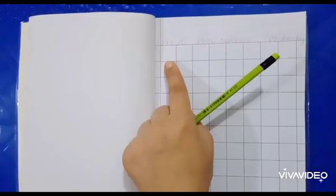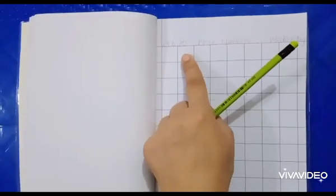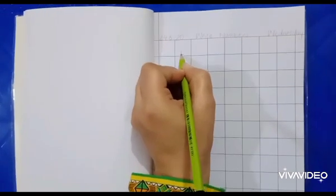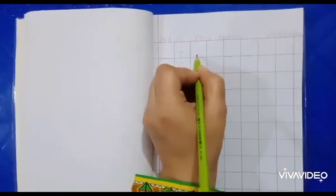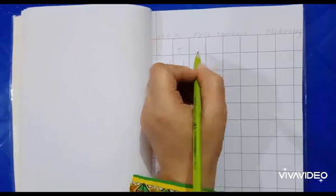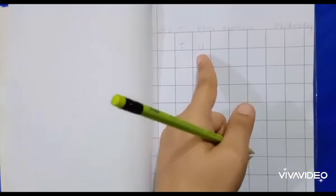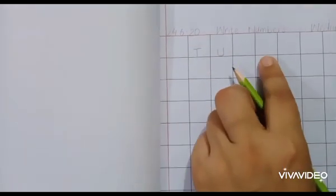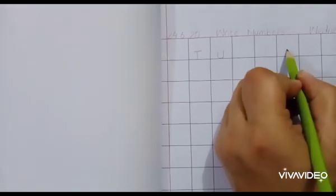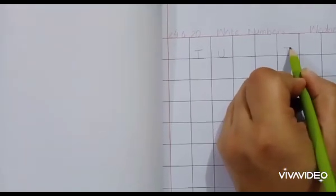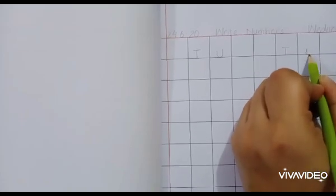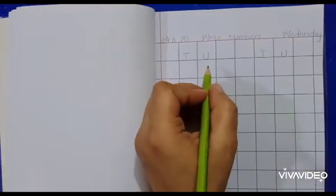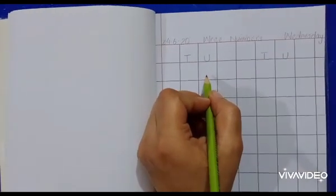Now leave one block and write T and U. T is for tens, U is for units. Tens, units. Leave two blocks and write T U again. Be careful about the formation.